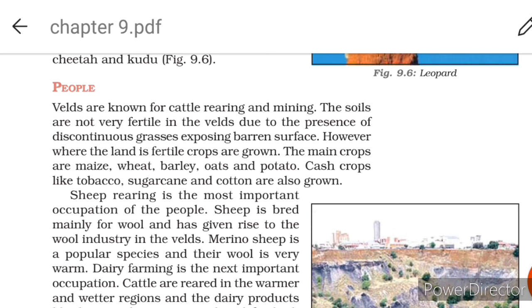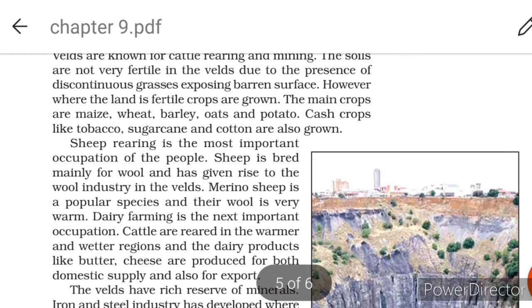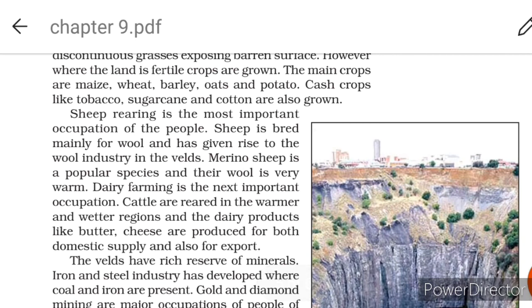Velds are known for cattle rearing and mining. The soils are not very fertile due to the presence of discontinuous grasses exposing barren surface. However, where the land is fertile, crops are grown. The main crops are maize, wheat, barley, oats and potato. Cash crops like tobacco, sugar cane and cotton are also grown.